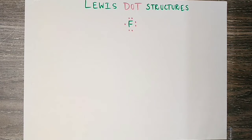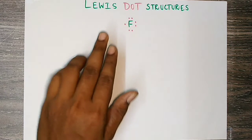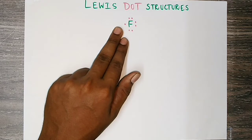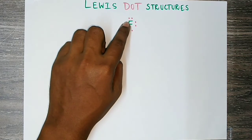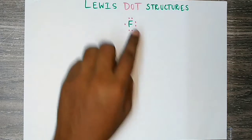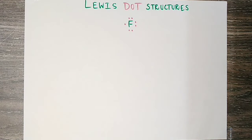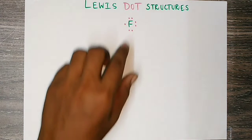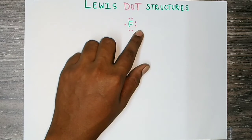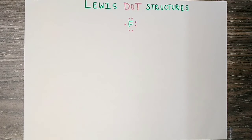Hello everyone. In this video, we will talk about the Lewis Structure. Lewis Structure is not just a matter of atoms. What is Lewis Structure? An atom has a chemical symbol in the center, and there are valence electrons. Valence electrons are the outermost electrons of an atom.